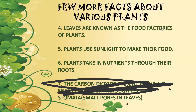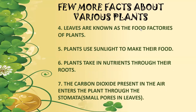Leaves are known as the food factories of plants — the food production of a plant is done in the leaves. Plants need water, sunlight, and nutrients essentially provided through the soil to make their food. They intake nutrients from the roots since the roots are in the soil. The carbon dioxide present in the air enters the plant through small pores in the leaves known as stomata.